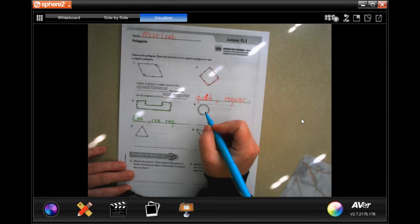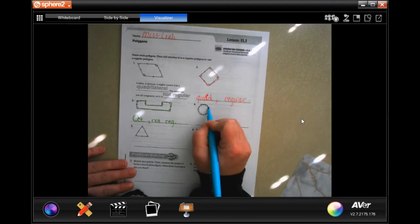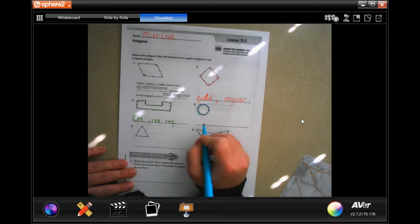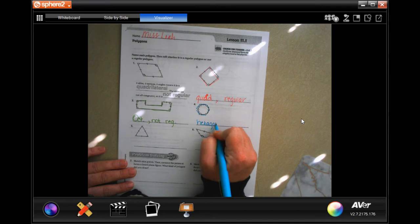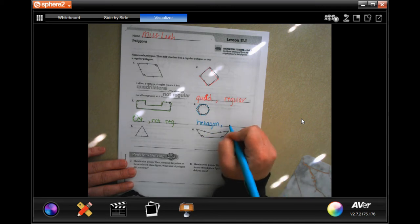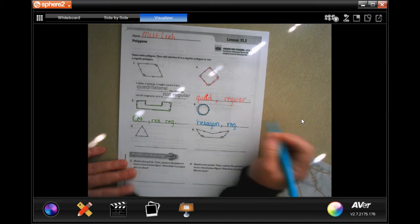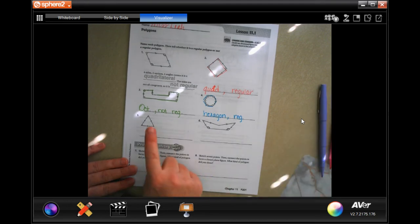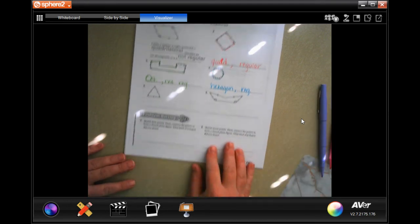Alright, this one has one, two, three, four, five, six sides, making it a hexagon. And because I have a name for it, it is regular. Okay, you guys do five and six, we're going to go down.